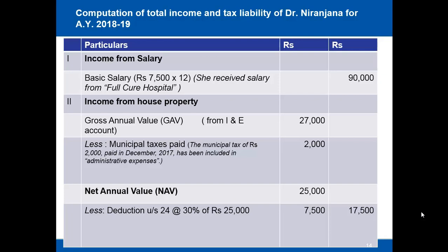Moving to income from house property: the rent of rupees 27,000 received is taken as gross annual value. We reduce municipal taxes of rupees 2,000 (paid in December 2017 and included in administrative expenses), giving a net annual value of rupees 25,000. A standard deduction under section 24 at 30% of rupees 25,000 is rupees 7,500, leaving income from house property at rupees 17,500.